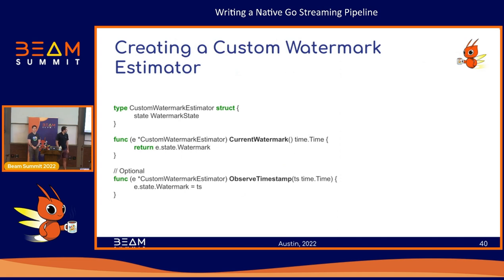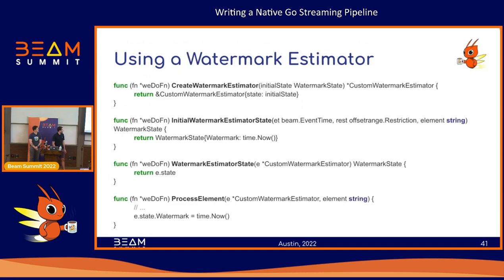Using a watermark estimator in Beam is relatively straightforward. If you're implementing a custom one, you need to create a struct with a current watermark function that returns a watermark of your choosing. You can optionally include an observe timestamp function that will be called every time an element is emitted, running your function with the timestamp of that emitted element. You just add a create watermark estimator function to your DoFn. You can also include stateful functions if you want to maintain state between runs, and you can pass your watermark estimator into your process element function for custom logic that depends on the elements you're reading.